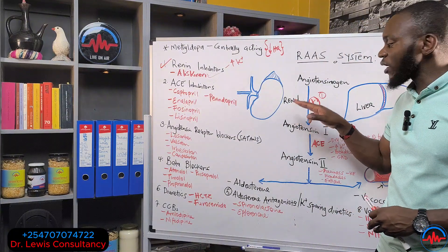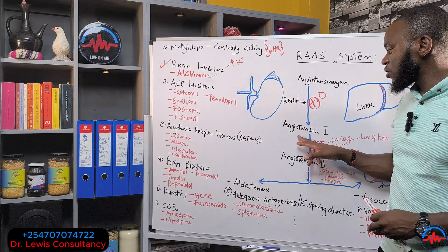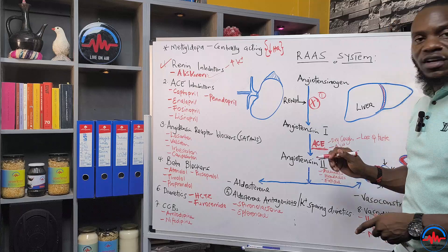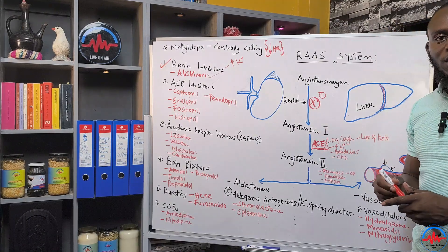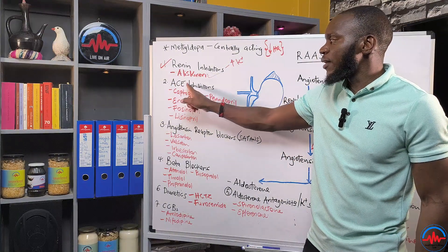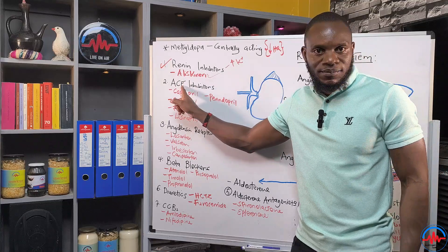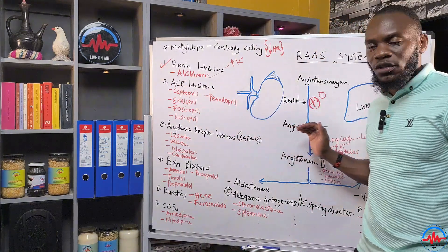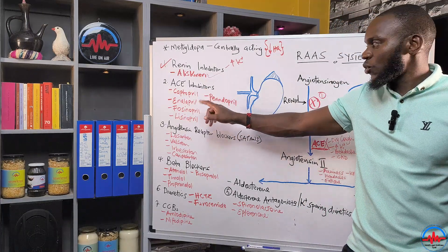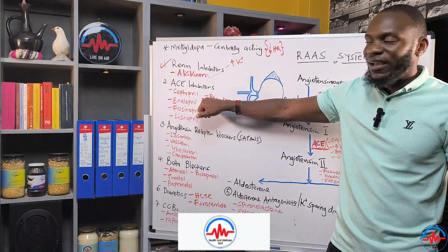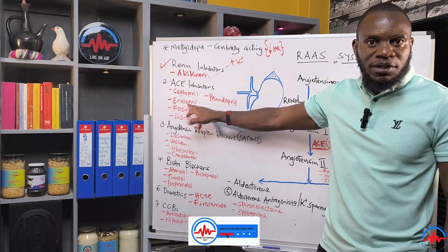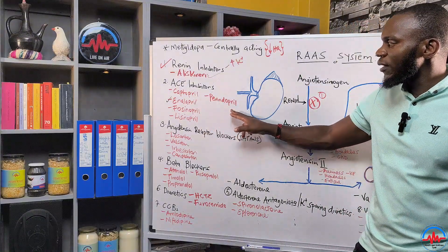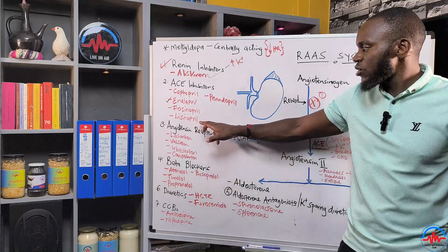If we've already passed that first stage and angiotensin 1 has already formed, we can block the second stage — the enzyme that converts angiotensin 1 into angiotensin 2. That enzyme is angiotensin converting enzyme. Drugs that block it are called ACE inhibitors — angiotensin converting enzyme inhibitors. Most of them end with '-pril': captopril, enalapril, perindopril, fosinopril, and lisinopril. When you read your package and see drugs ending with '-pril', those are ACE inhibitors.